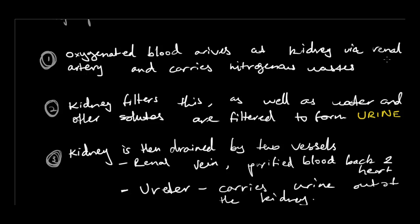This filtration process hasn't been covered in full detail here, but it is actually quite a complex process. It has multiple stages and goes through multiple tubules, and at the end we get urine. There are many different things that happen in between before the kidney finishes filtering and produces urine.